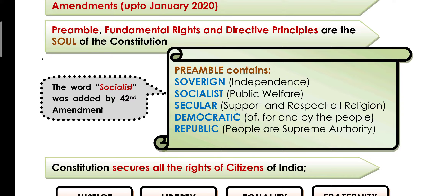Next, it talks about 'secularism' — that India is a secular country, meaning India has no religion of its own. India is not a Hindu nation, or a Muslim nation, or a Christian nation. It is a secular nation which does not have its own religion but supports and respects all religions — Hindu, Muslim, Christian, Jewish, Parsi — every religion's people stay in this country. That's why India is a secular state.